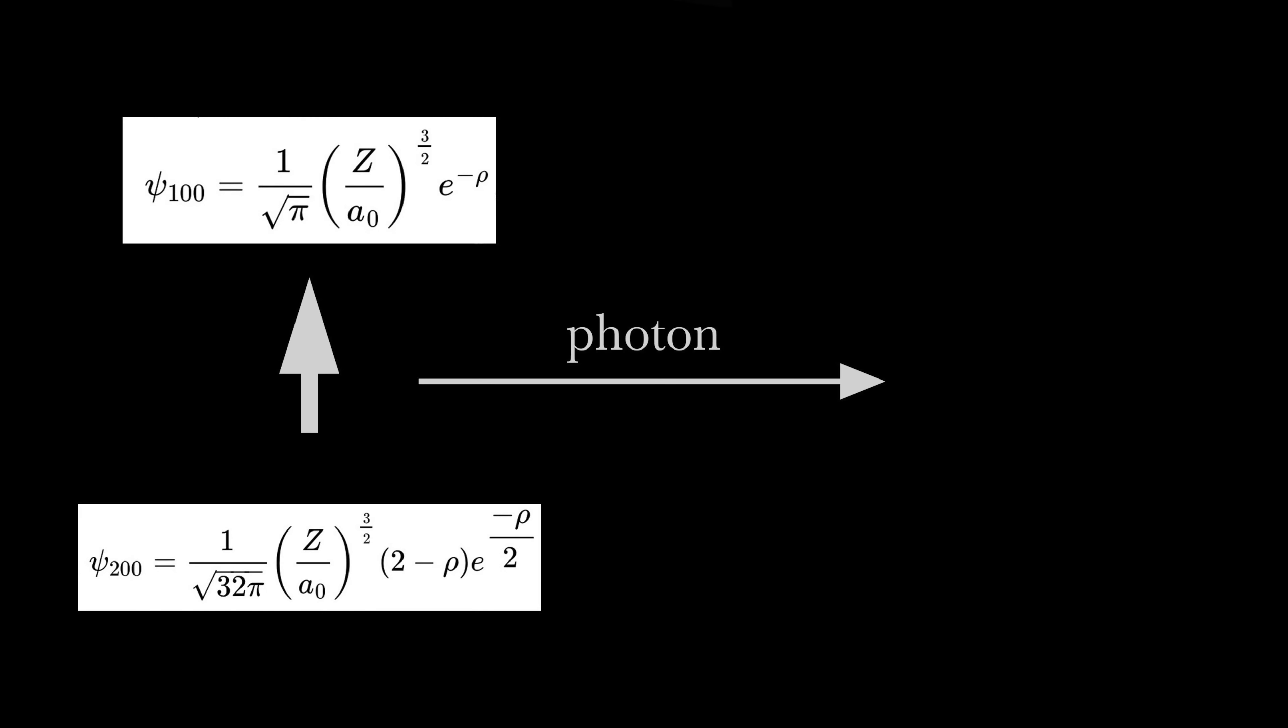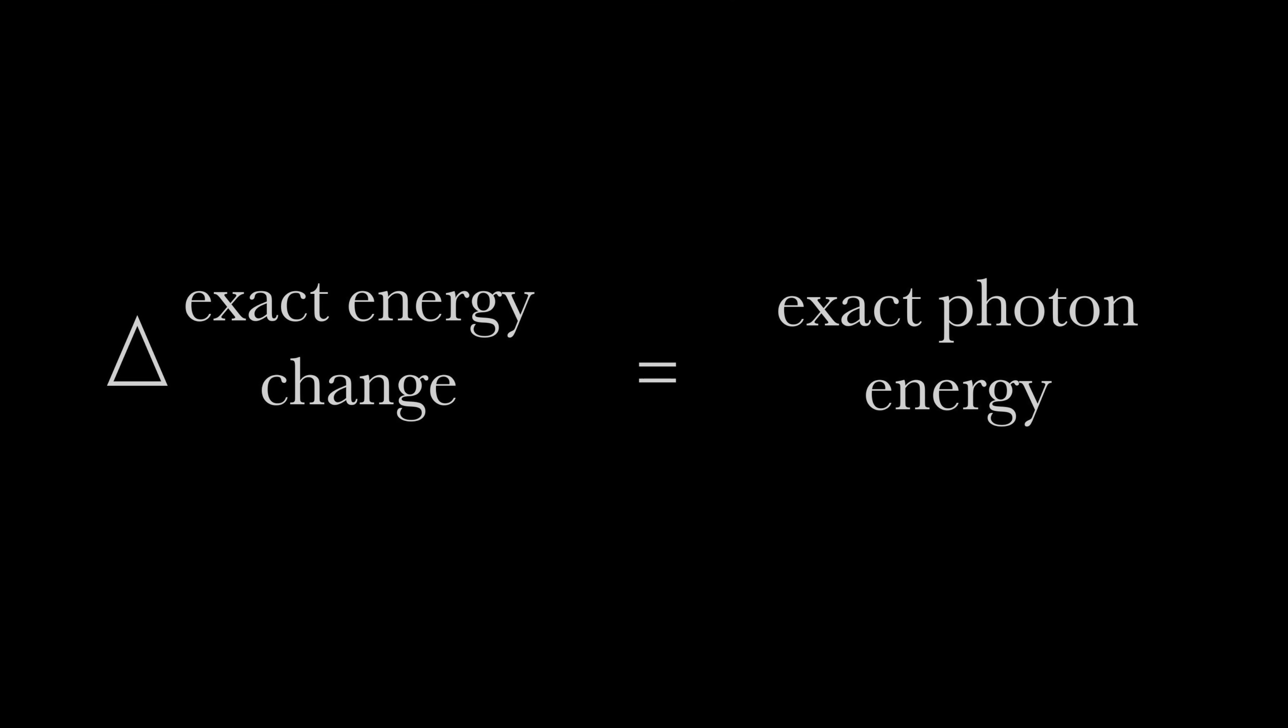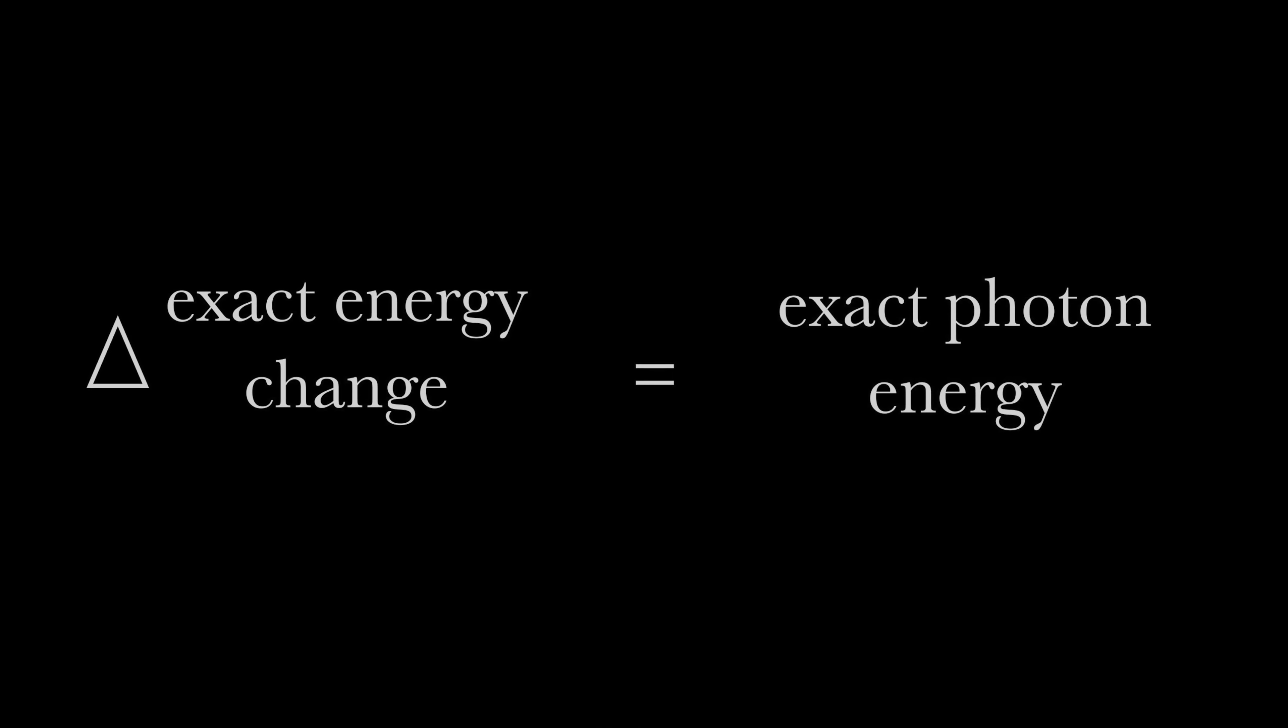A photon is generated when this second equation shifts to the first one. Because the equation's changes are exact, the amount of energy in the photon is exact too. It radiates as an electromagnetic wave until it reaches an atom that accepts it.